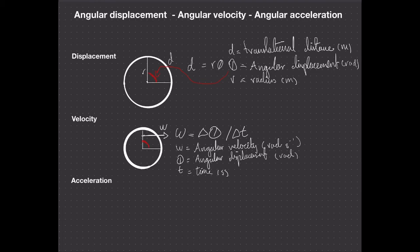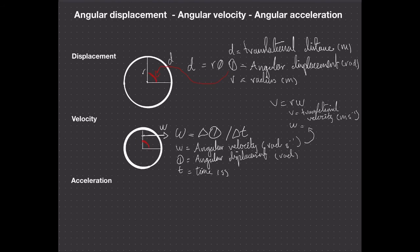We can relate the angular and translational quantities — they're linked with the equation V equals R times omega, where V equals our translational velocity: the actual movement along the outer edge or arc of the circle, in meters per second. Omega is our angular velocity in radians per second, and R is our radius in meters.